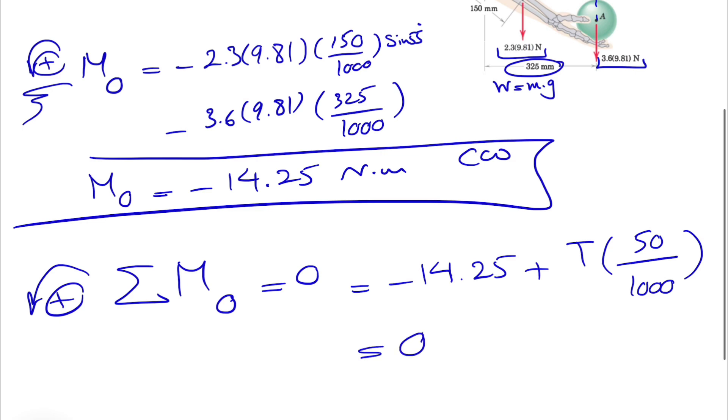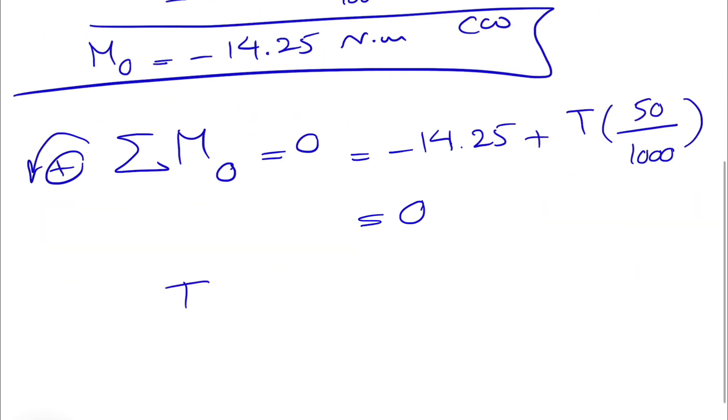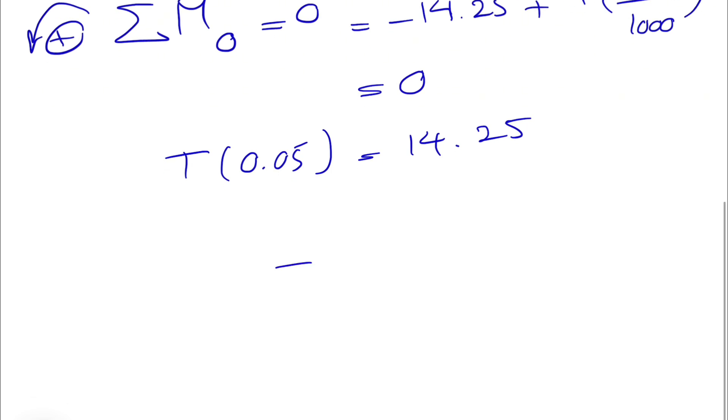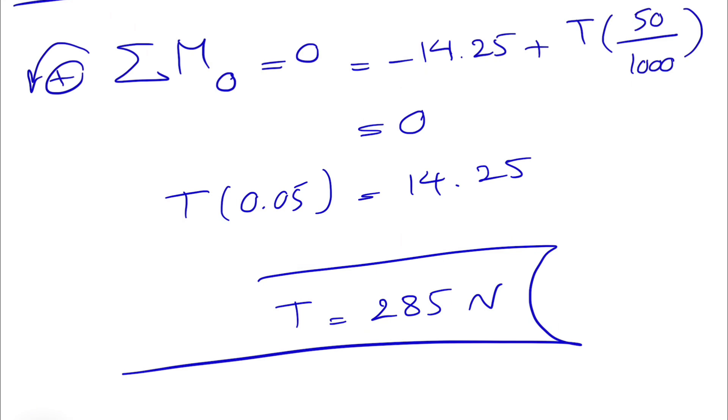50 millimeters divided by 1000 to get it in meters, and this will equal zero. T times 0.05 equals 14.25, and if you calculate T, we're going to get 285 Newtons, which is the answer for the second part. That's all for this one, but let's go to ChatGPT and see what answer it's going to give us.